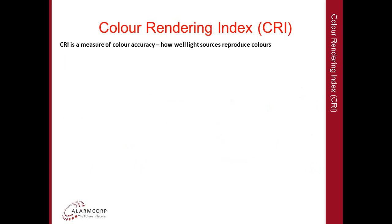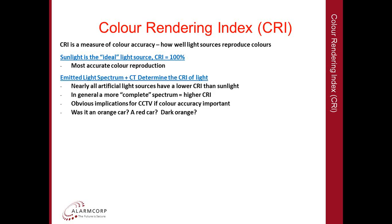Let's talk about Color Rendering Index, or CRI. CRI is a measure of color accuracy — it measures how well a light source reproduces colors. Sunlight has a CRI of 100%, meaning it gives you the most accurate color reproduction. The emitted light spectrum and the color temperature of a light source determine the CRI. Nearly all artificial light sources have a lower CRI than sunlight. In general, the more complete a spectrum is, the higher the color rendering index. This has obvious implications for CCTV if color accuracy is important — particularly with a sodium street lamp, where you might not be able to distinguish whether a car was orange or red.